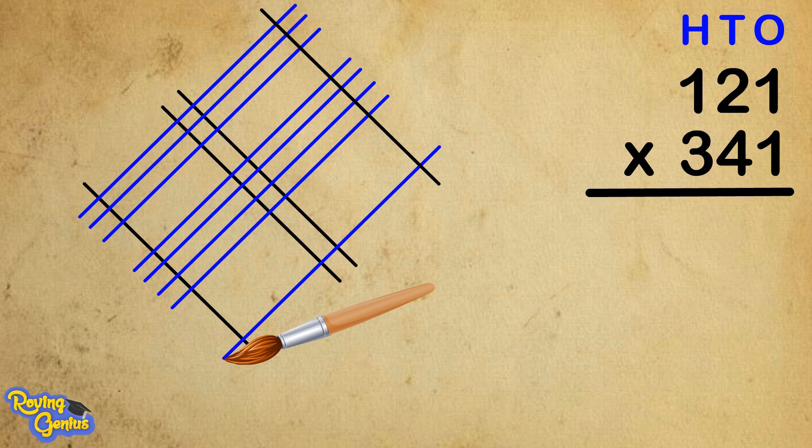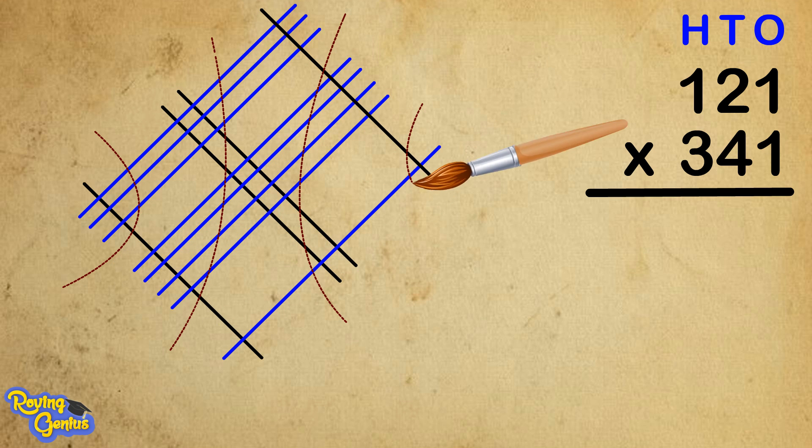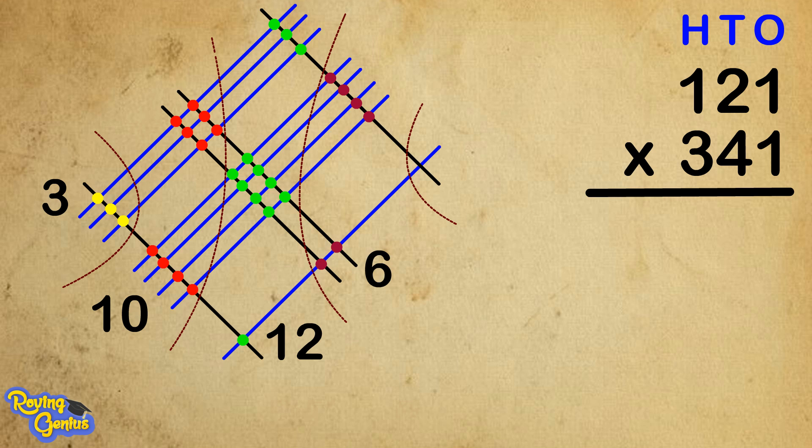Now let's divide the parts as we did earlier. So we get 3, 10, 12, 6, 1. Huh, how can we have two numbers in a place? Elvis, what to do now?